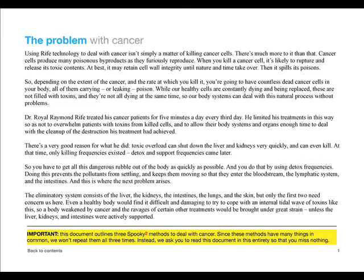The Spooky 2 Rife system offers two main routes to tackle cancer. The first uses plasma mode as its principal weapon, and the second uses contact mode — both adjuncted by remote mode. This document gives broad outlines of how to approach late stage cancer in both modes. Contact mode is further subdivided into two plans: one for four Spooky 2-5M frequency generators, and one for two. These three approaches are called Plasma Plus, Contact Plus 4, and Contact Plus 2.